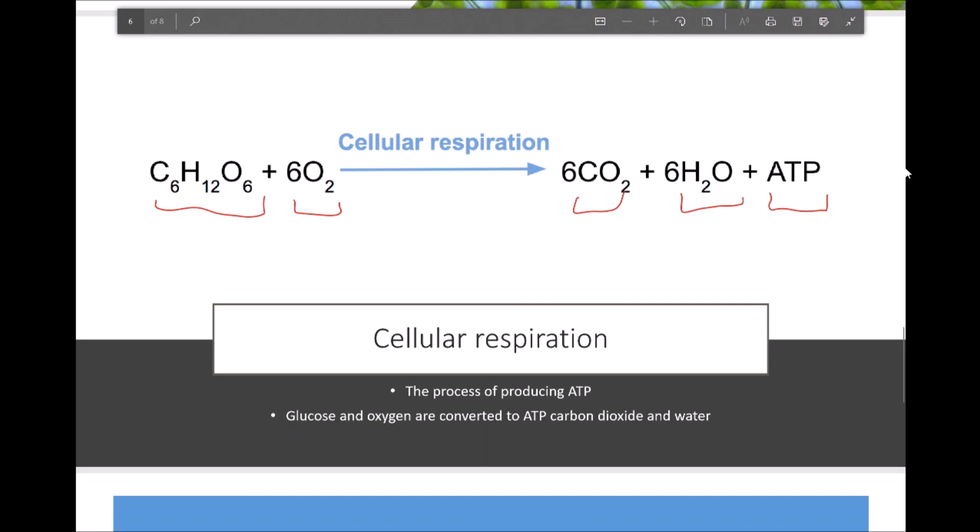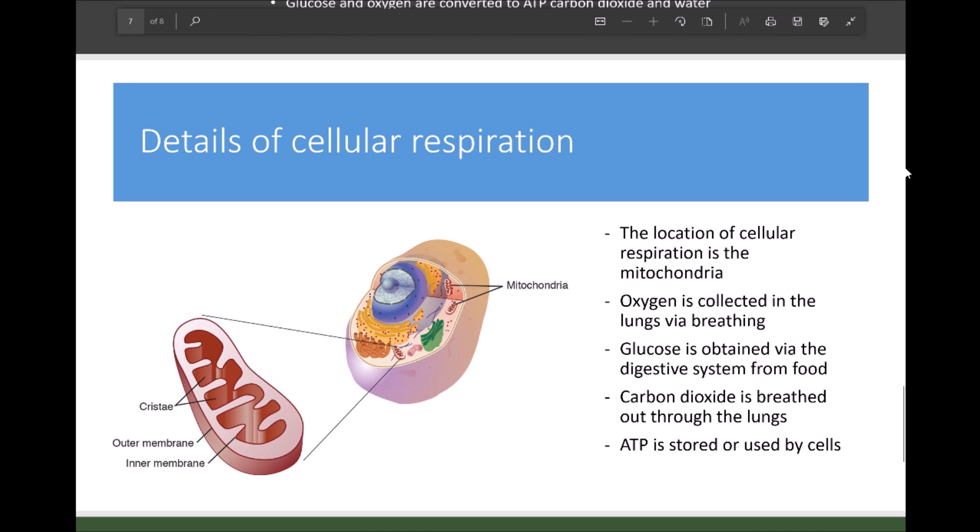So some details of cellular respiration. The location of cellular respiration is the mitochondria, which is why the mitochondria is known as the powerhouse of the cell. Oxygen is collected in the lungs via breathing. Glucose is obtained via the digestive system from food for animals. For plants, they are able to use the glucose directly from their photosynthesis. Carbon dioxide is breathed out through the lungs and ATP is stored in or used by cells.